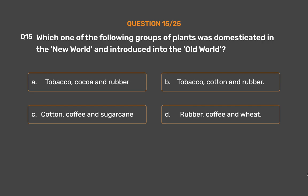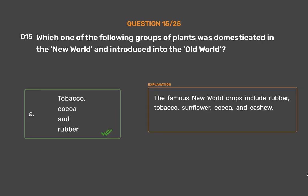The correct answer is Option A: Tobacco, Cocoa and Rubber. The famous New World crops include rubber, tobacco, sunflower, cocoa, and cashew.